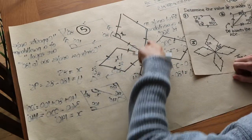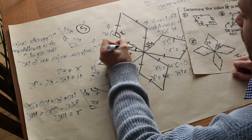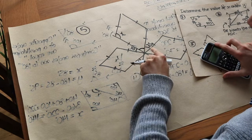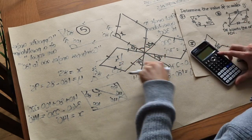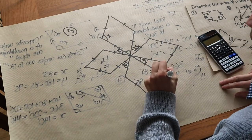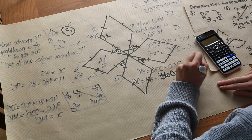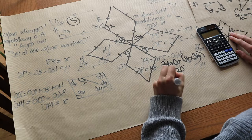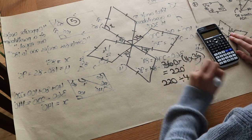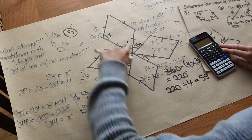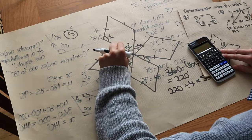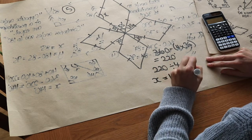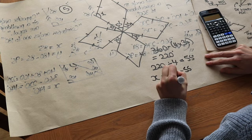For the last problem, four equally-spaced rhombuses meet at a point, with each outer angle being 35 degrees. Since the angles around the point sum to 360, we do 360 minus 4 lots of 35, giving 220 degrees. Dividing by 4 gives 55 degrees for each interior angle of a rhombus. Since a rhombus is a parallelogram, co-interior angles add to 180, so we do 180 minus 55, giving x equals 125 degrees.